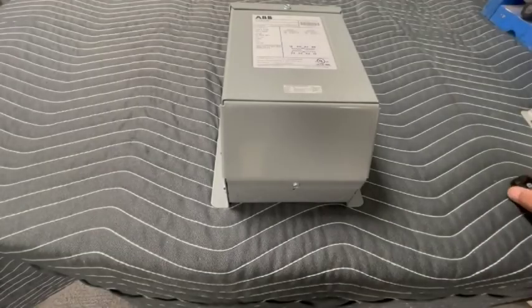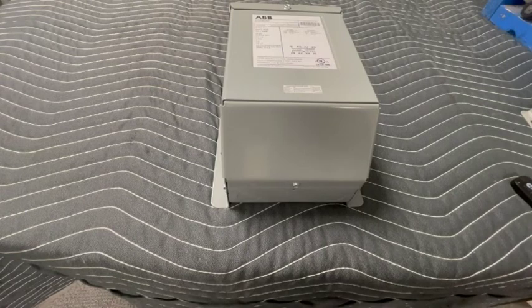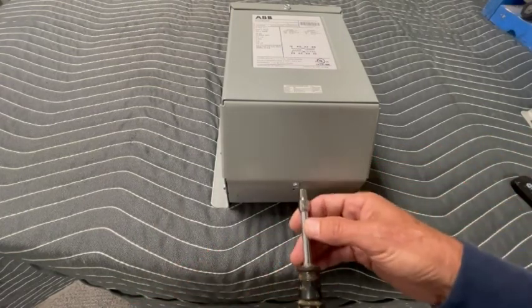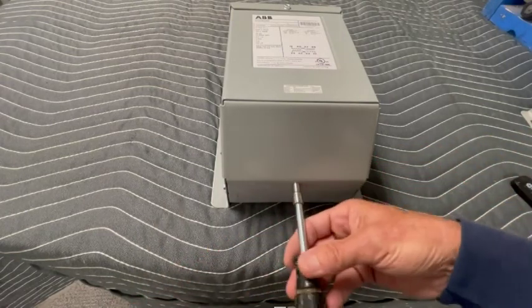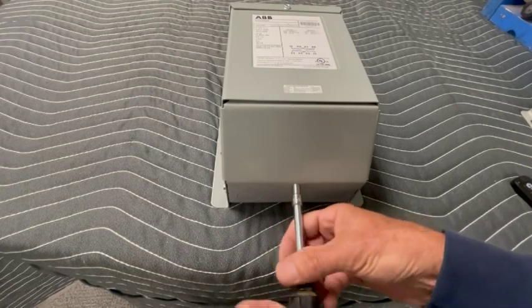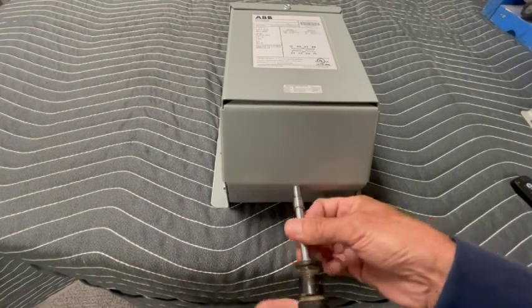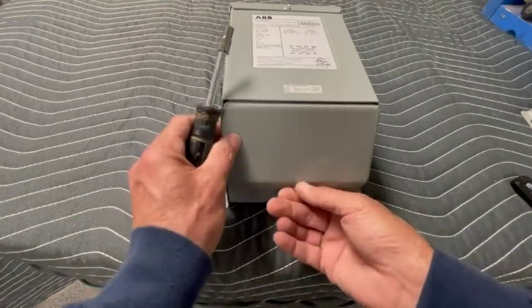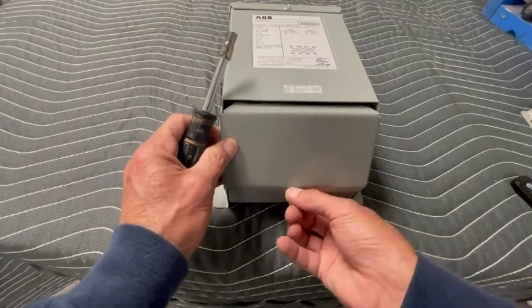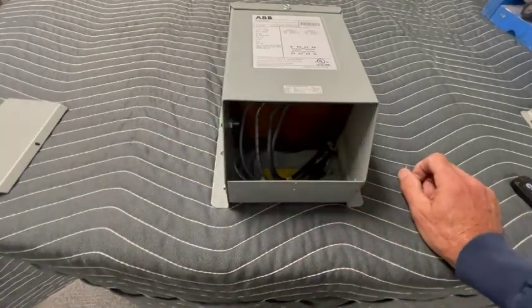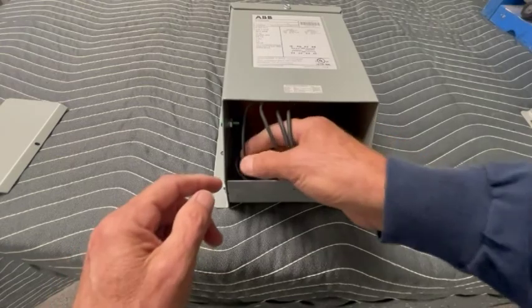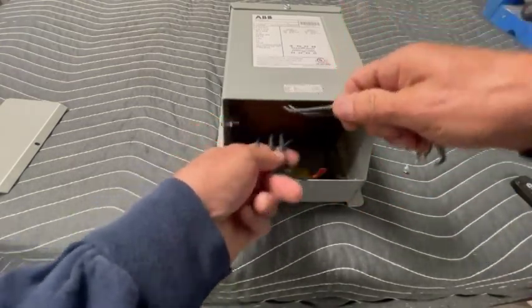In order to access the wires for the buck boost transformer we'll have to remove the bottom plate. So you can take a quarter inch nut driver or socket and remove this screw right here and the plate should come right off. Okay, and there you can see our wires in there. Pull these out and we'll take a look at them for a second.